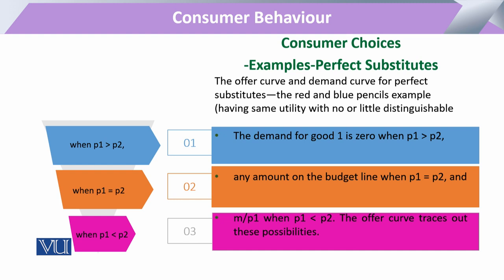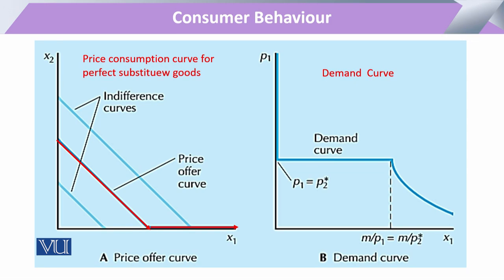When the price of commodity 1 on the x-axis is greater, the consumer will prefer to have the commodity available on the y-axis — the cheaper one over the costly one. So keeping in view the price, demand for x1 is zero. The consumer will reduce demand for whichever perfect substitute is more expensive, and when we join these points we come up with a straight line.